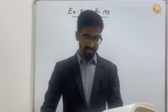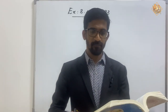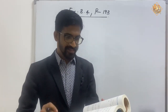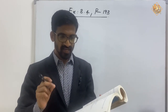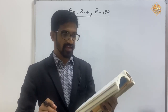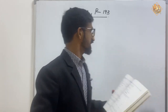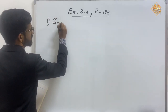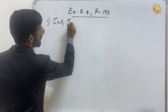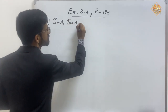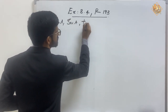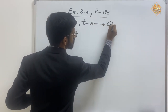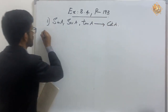Now students, let's look at exercise 8.4 of page number 193. The first question: express the trigonometric ratios sin A, sec A, and tan A in terms of cot A. It's a very easy question.